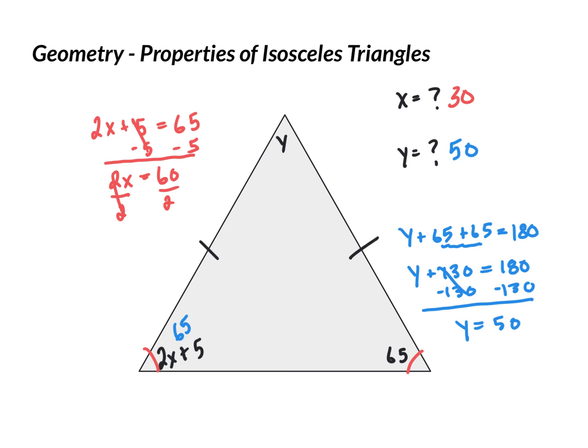So, just to recap, using those properties we'd established earlier about isosceles triangles, we knew that the two sides were equal, therefore the angles across from them were equal. And there's a lot of algebra.